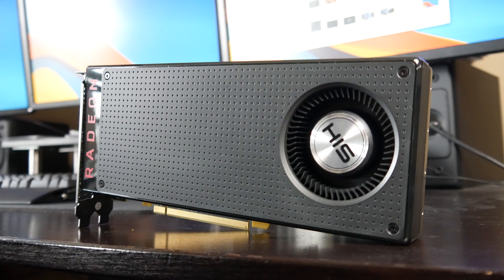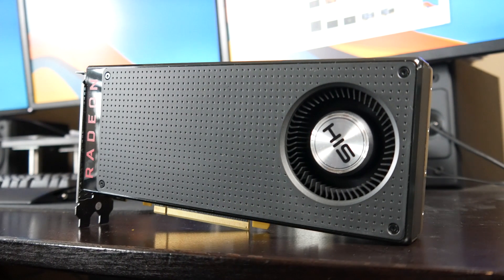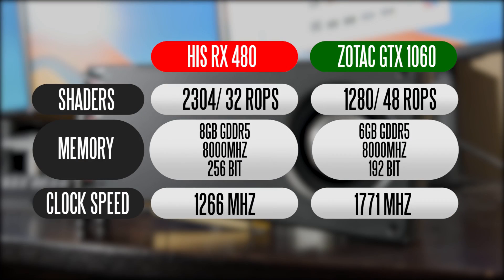In terms of specifications, looking at the RX 480 versus the GTX 1060: in terms of overall shader units, we have about 1280 CUDA cores on the 1060 versus about 2304 stream processors on the AMD side. On ROMs, we do have more on the 1060 — 48 versus 32. Transistor count is quite a lot higher on the RX 480 at about 5.7 billion versus about 4.4 billion on the 1060.